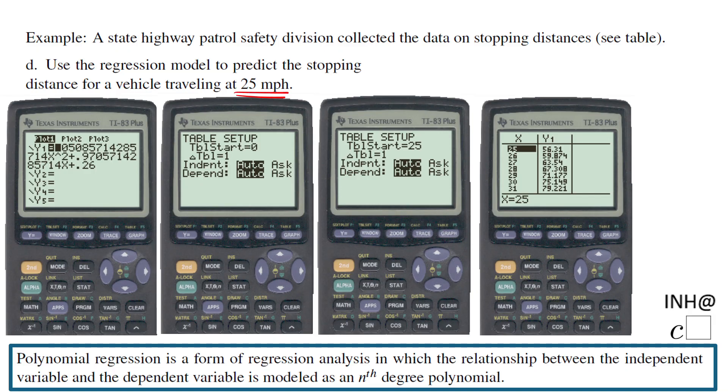I use this way when I use the table setup. So Second, Window, and you get a table setup. Usually the table starts from zero. I change it and I put 25. Then you're gonna click Second, Table, which is right here, Second, Graph, and you get a table. This table will start with 25 and you have the value you're looking for. That is one way. Of course, you can go on the calculator and request to get a value of y when x equals 25.